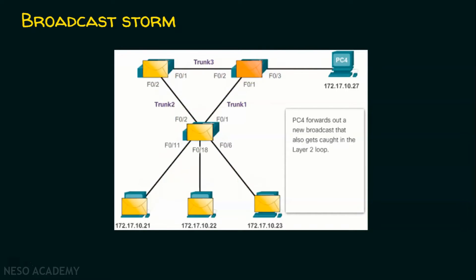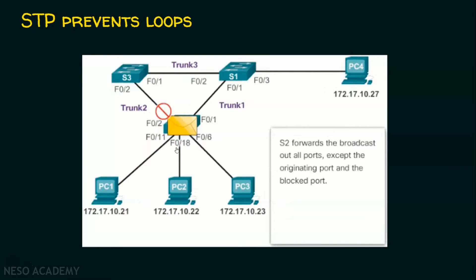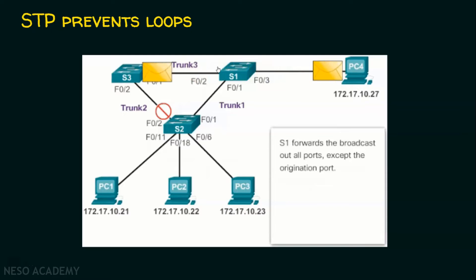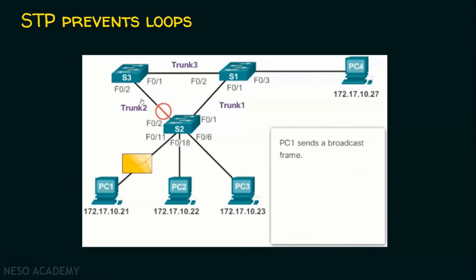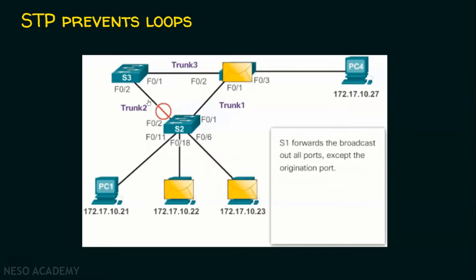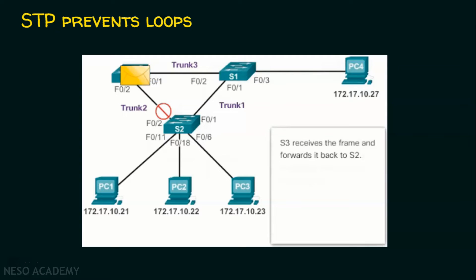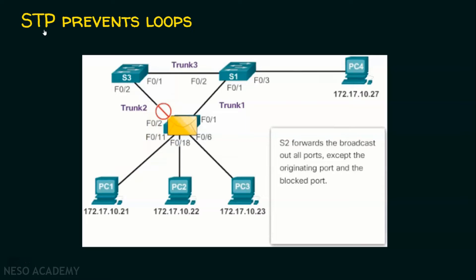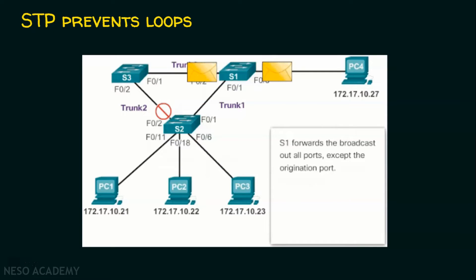Spanning Tree Protocol handles this situation very perfectly. PC1 sends a broadcast, the switch broadcasts to all outgoing ports, but the redundant link is temporarily blocked. When the same message is received back at S1, it is dropped because this link is a backup link. This backup link will be used only when the existing link goes down. We need redundancy, but we don't want it to cause problems, and that is why we use Spanning Tree Protocol. Redundant links will be made available only when the switch or existing links encounter failures.